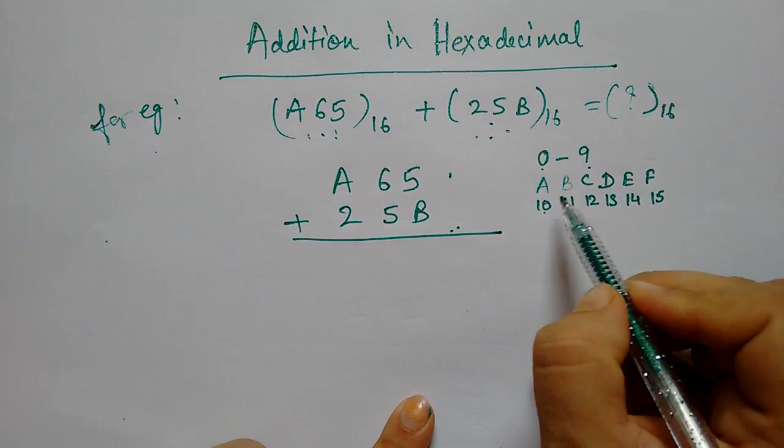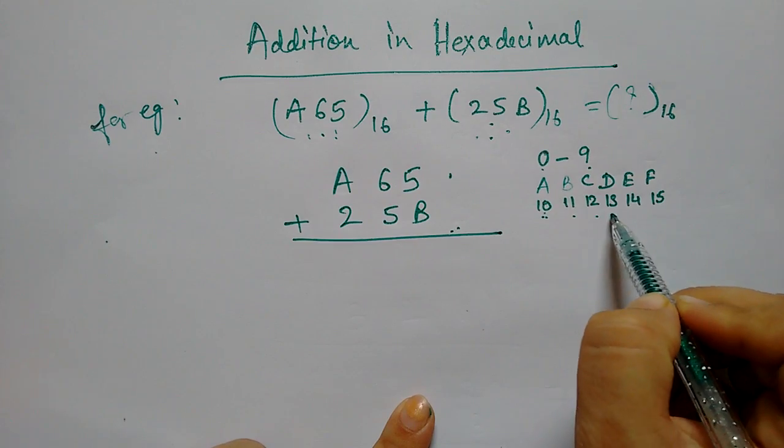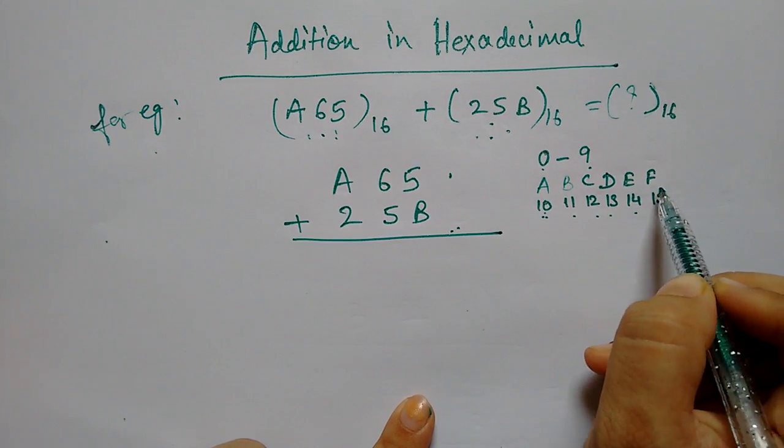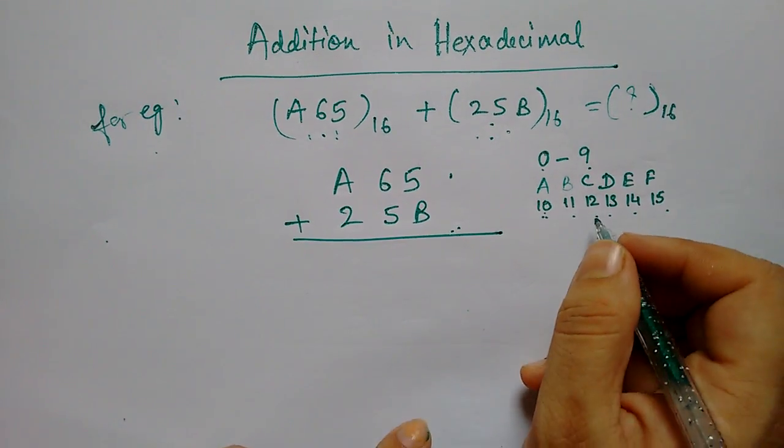Now, how do we write in hexadecimal? We write 0 to 9. Then we write 10, 11, 12, 13, 14, 15. We write A, B, C, D, F. We write in hexadecimal.